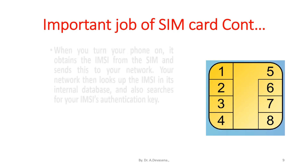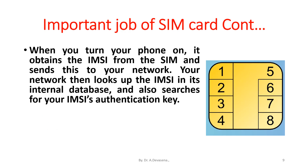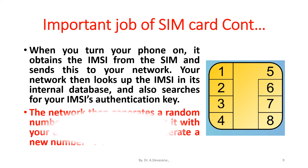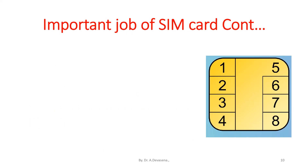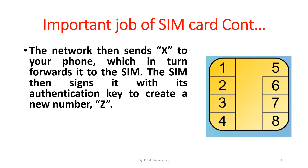When you turn on your phone, it obtains the IMSI from the SIM and sends it to your network. Your network looks up the IMSI in its internal database and searches for your IMSI's authentication key. The network then generates a random number — we will call it X — and combines it with your authentication key to generate a new number Y. The network then sends X to your phone, which in turn forwards it to the SIM.